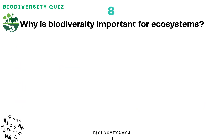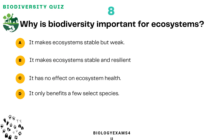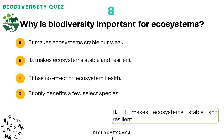Question number eight: Why is biodiversity important for ecosystems? Option A: It makes ecosystems stable but weak. Option B: It makes ecosystems stable and resilient. Option C: It has no effect on ecosystem health. Option D: It only benefits a few select species. The correct answer is: it makes ecosystems stable and resilient.